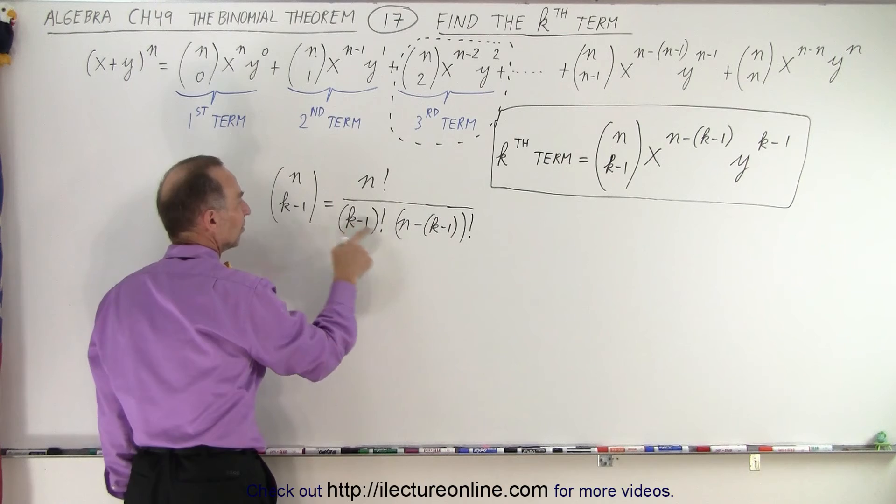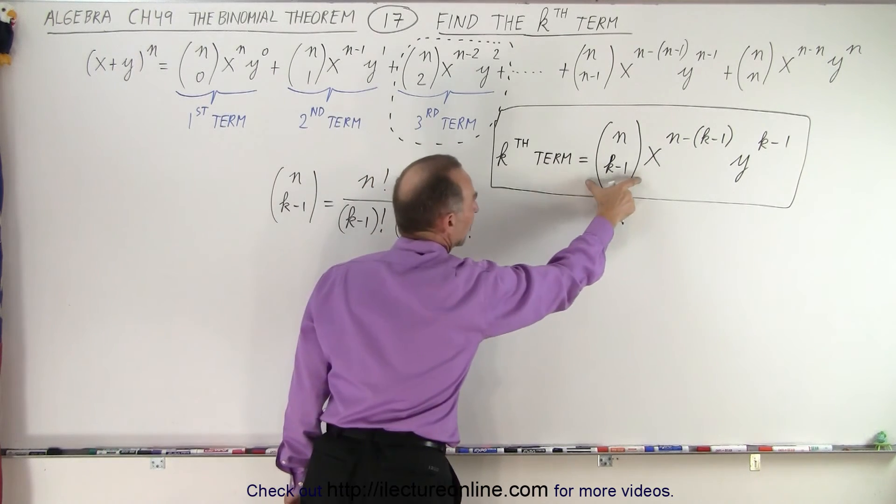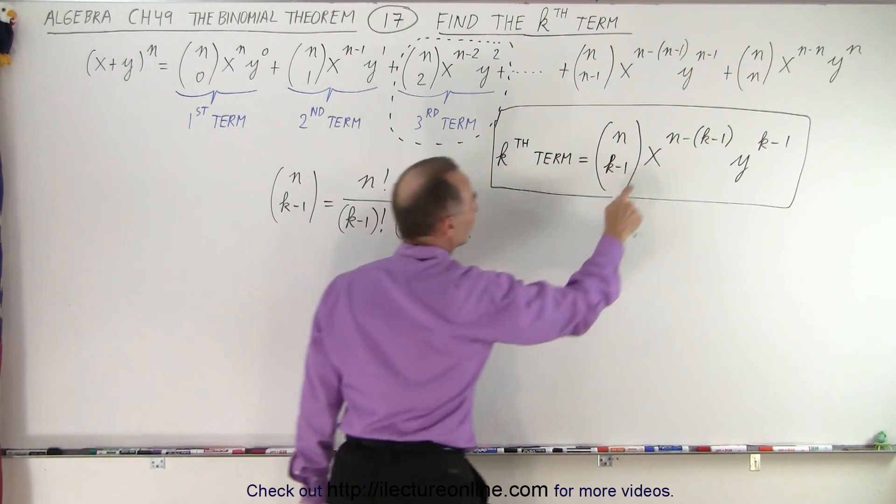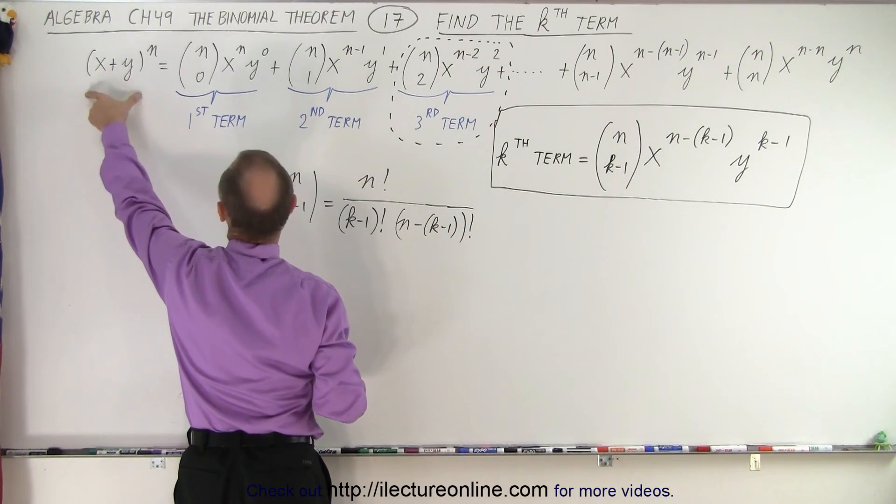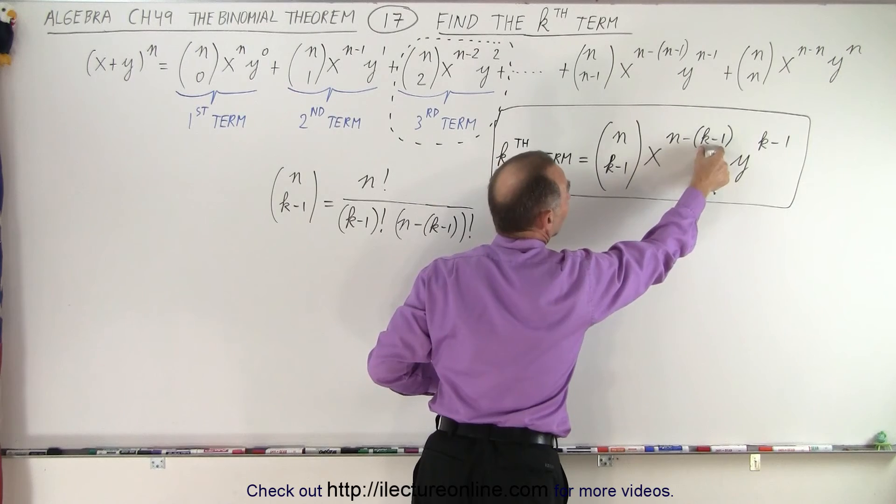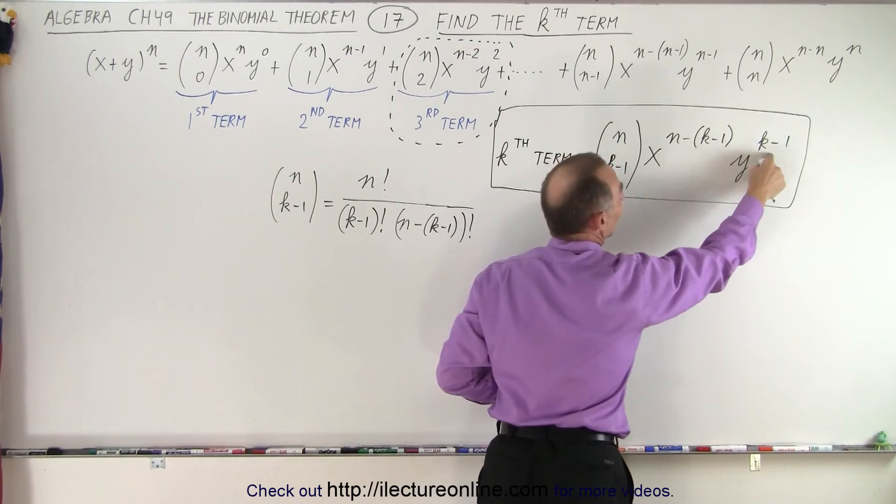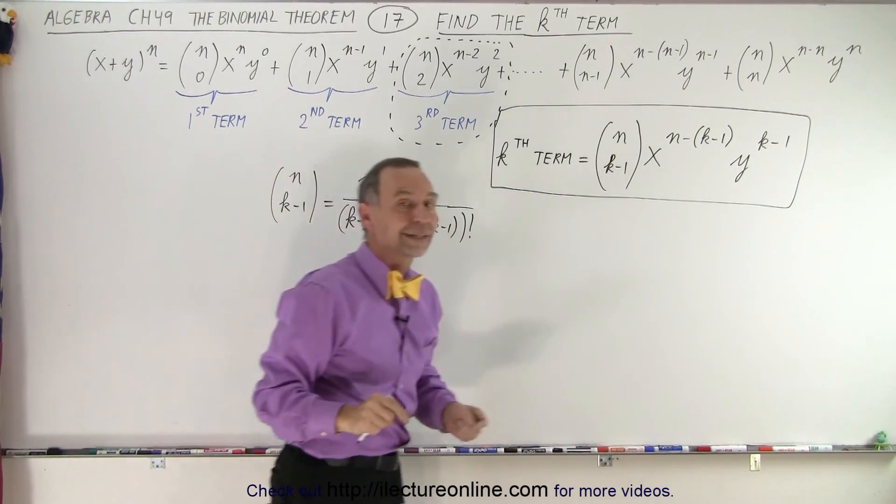So this equals the numerical coefficient. Then we have x^(n-(k-1)), where n is the exponent to which we expand the binomial, minus the number 1 less than k, and then y^(k-1).